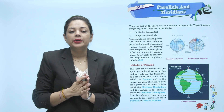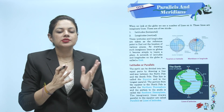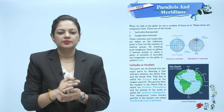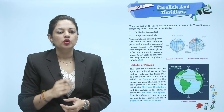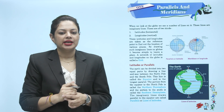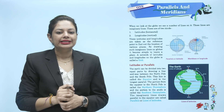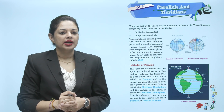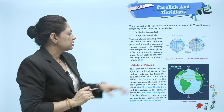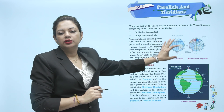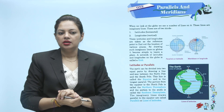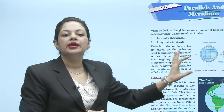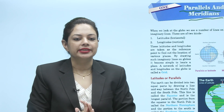Globe के बारे में हमने पढ़ा. Globe पर बहुत सारी lines होती हैं जिनको Parallels और Meridians के नाम से बोला जाता है. When we look at the Globe, we see a number of lines on it. These lines are imaginary lines. जब हम Globe को देखते हैं तो उस पर बहुत सारी lines होती हैं. यह imaginary lines होती हैं — means यह real में नहीं होती, सिर्फ हमें दिखती हैं.